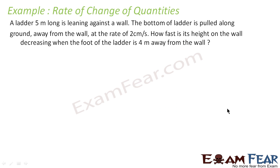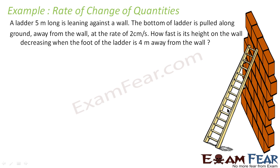It is a ladder 5 meters long, leaning against a wall. The bottom of the ladder is pulled along the ground away from the wall at some rate. We have to find how fast the height on the wall decreases when the foot of the ladder is 4 meters away from the wall. During the question, you won't be able to understand what it's about — you have to visualize this. So let's take this figure.